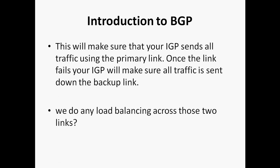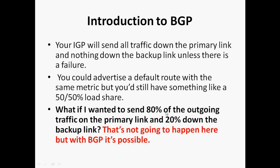If you want to do load balancing, just remove the AD value for both primary and secondary and configure the default AD value — that time it will do load balancing 50-50. You could advertise a default route with the same metric and still have something like 50-50 load sharing. But what if I want to send 80% of traffic to the primary link and 20% down the backup link? That is not going to happen with default routing. But with BGP it's possible — through BGP we can configure 80% of traffic to go via primary and 20% via secondary.